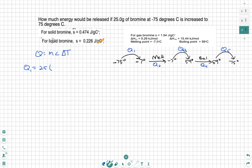So the specific heat for a solid bromine is up here, 0.474. It had to be written to us or else we weren't going to find that. And our change in temperature is final minus initial. So we're going to plug all that in. 25 times 0.474 times negative 7 minus negative 75.